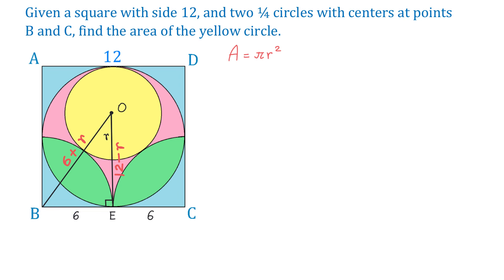Applying the Pythagorean theorem: 6 squared plus (12 minus R) squared equals (6 plus R) squared.